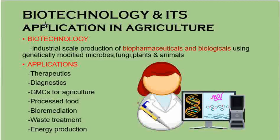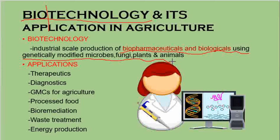So what is biotechnology? Both technology and something biological are involved. Biotechnology involves the industrial-scale production of biopharmaceuticals and biologicals using genetically modified microbes, fungi, plants, and animals. A biopharmaceutical — for example, insulin or any vaccine — is a biological medical product made from living cells or produced by any biotechnological method.